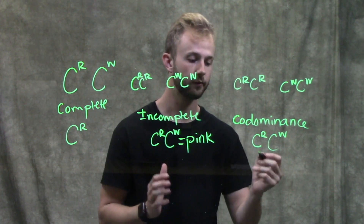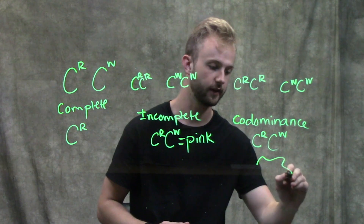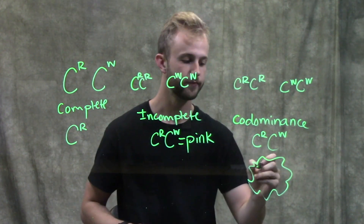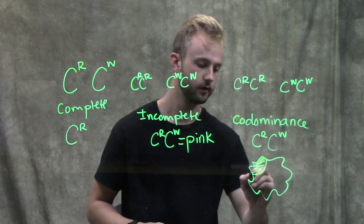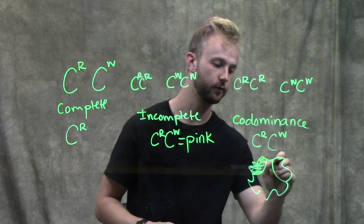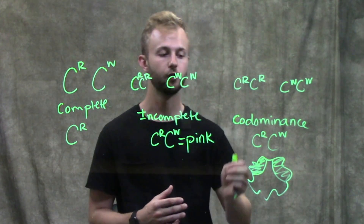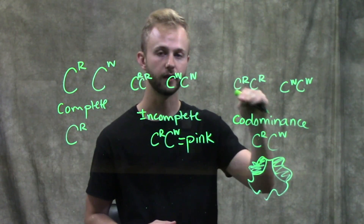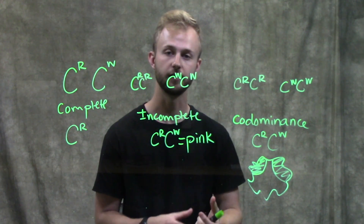So what that would look like — let's say this is our flower. Part of it would be red, and maybe another part would also be red, and then the rest of it would be white. So what we can see is that we have both the red color and the white color being expressed at the same time, independently of one another.